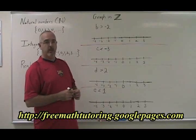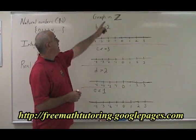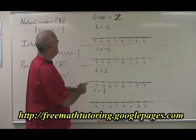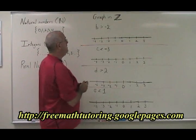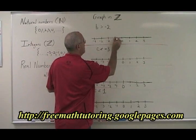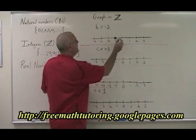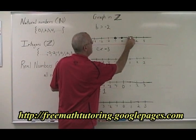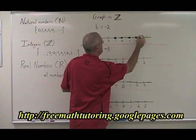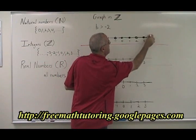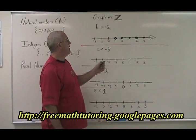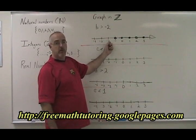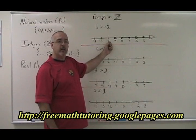Now let's try graphing on the number line in the integers universe. B greater than negative 2. Integers include negative numbers. Negative 1 is greater than negative 2, so our answer starts there. 0 and all of the positive numbers are also greater than negative 2, so I have to put dots on them all and continue forever in the positive direction. I cannot include negative 2 in my answer because it is not greater than itself.